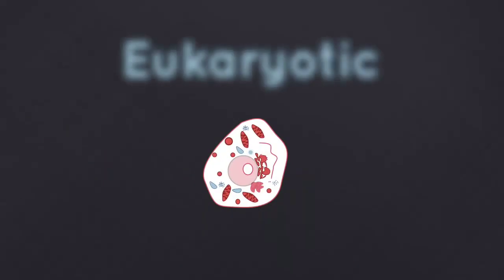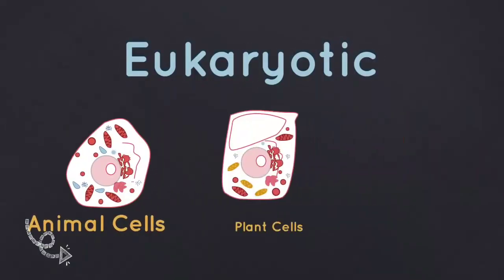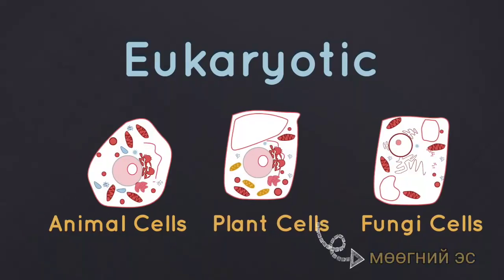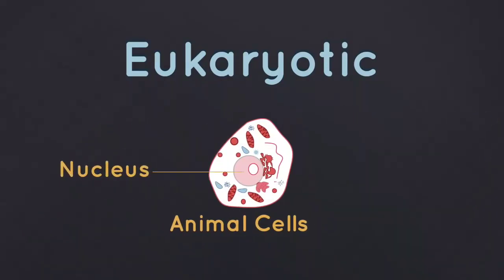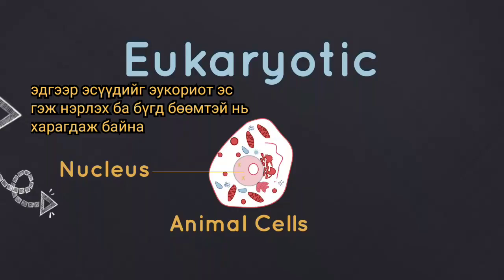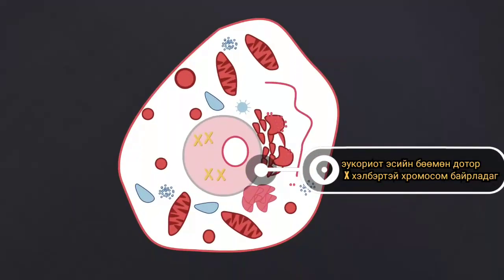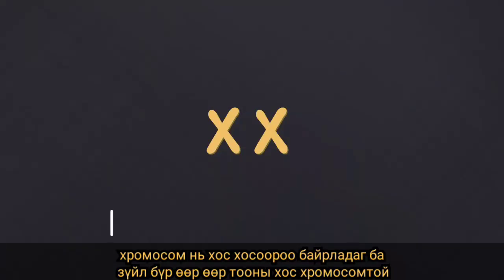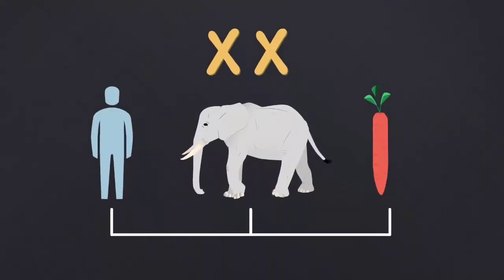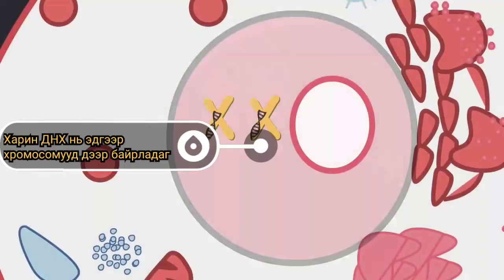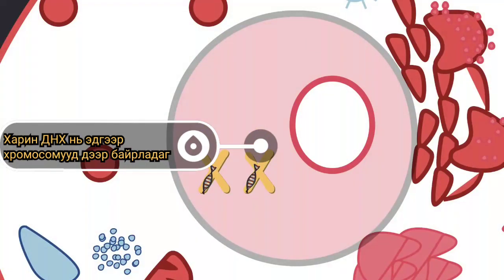Let's start with where it is found. Most cells are eukaryotic — animal cells, plant cells and fungi, etc. Inside eukaryotic cells you have a nucleus. Within most nuclei there are X-shaped chromosomes. Chromosomes occur in pairs but the number changes depending upon the species. Humans have 23 pairs, elephants have 28 pairs and carrots have 9 pairs. DNA is found within these chromosomes.